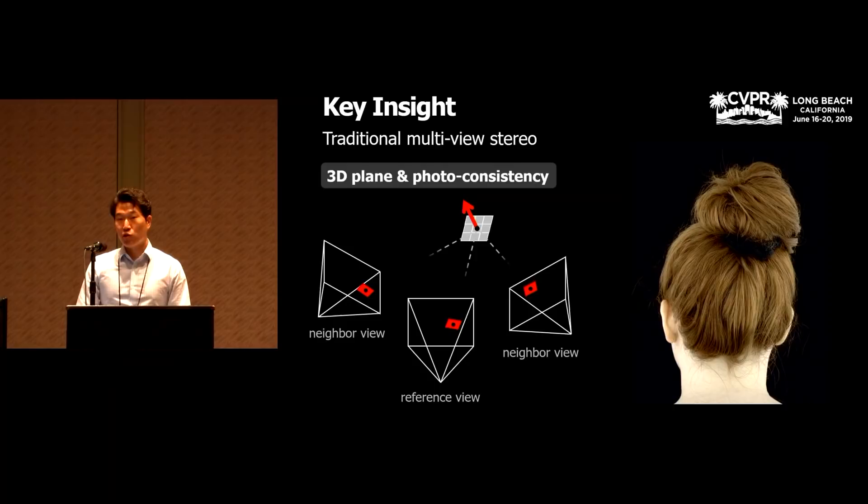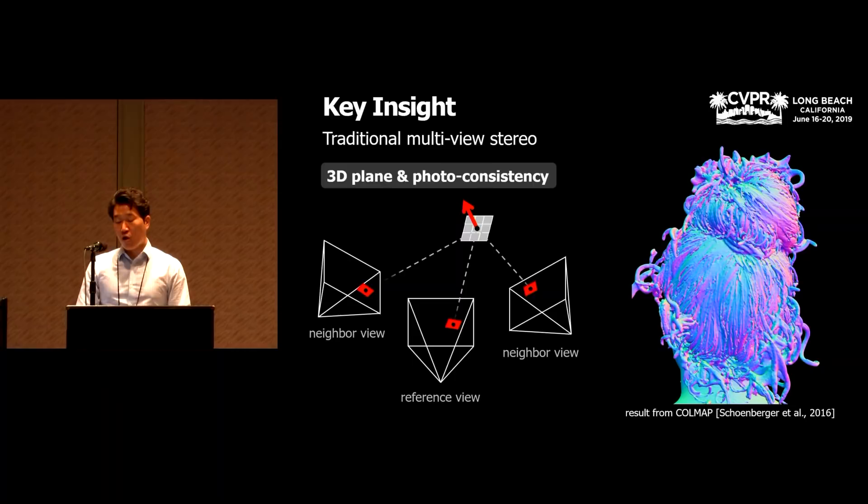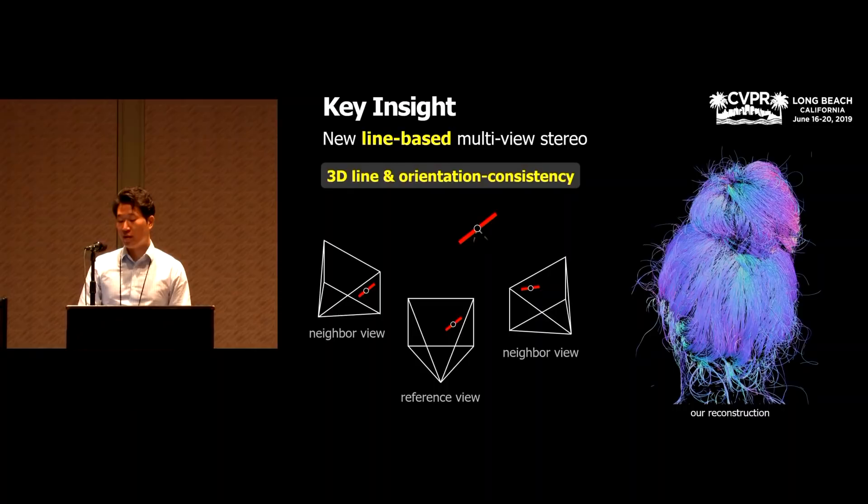The key insight of our work starts from rethinking traditional multi-view stereo. Traditional methods assume that the target object can be modeled using 3D planes and try to reconstruct the 3D surface using photo consistency of multiple views. So traditional methods such as Colmap reconstruct hair geometry as a 3D surface like this. It fails to capture the granularity of hair strands, especially on many flying hairs. So we break the assumption and replace the 3D plane with a 3D line and propose a new line-based multi-view stereo.